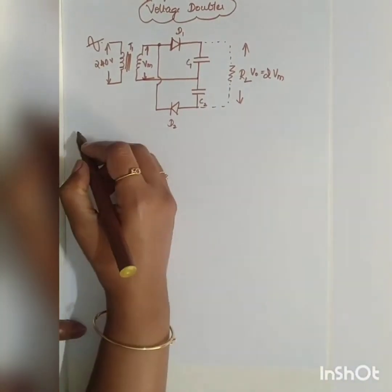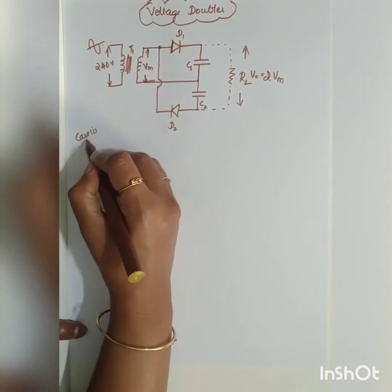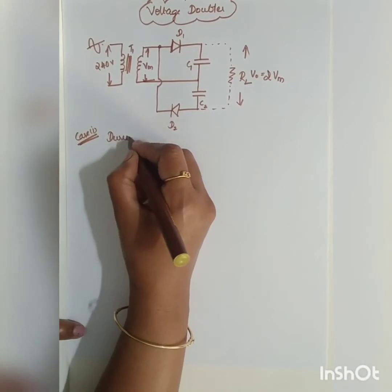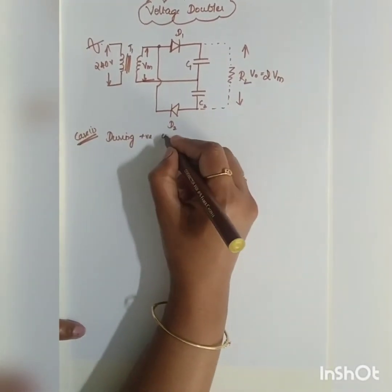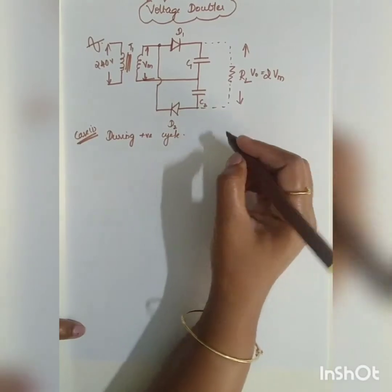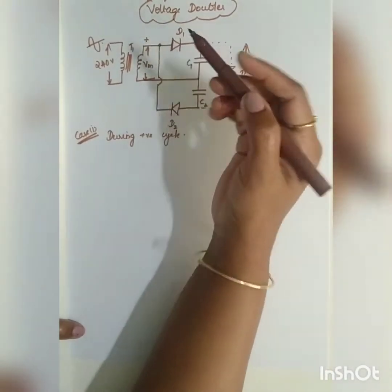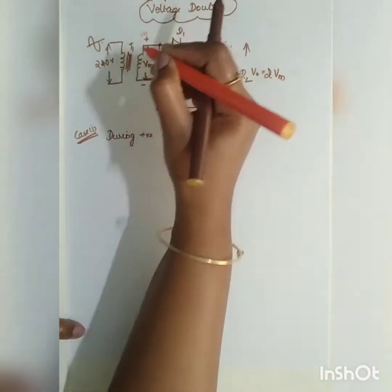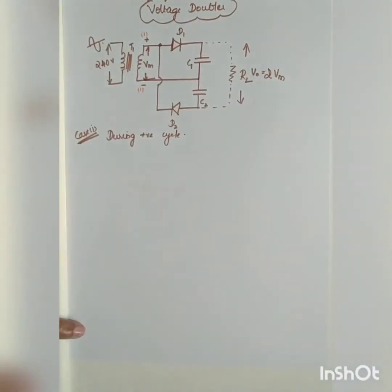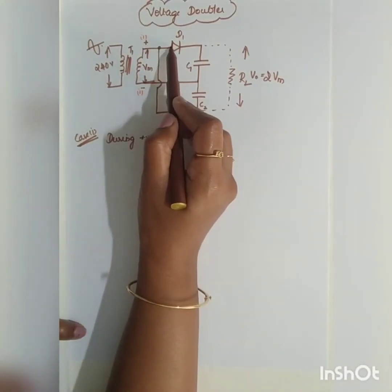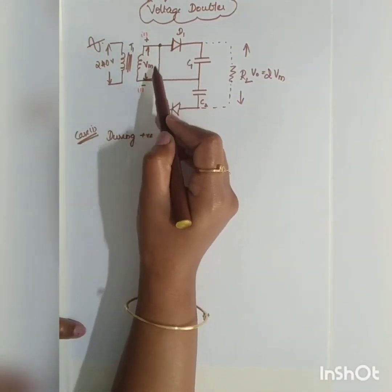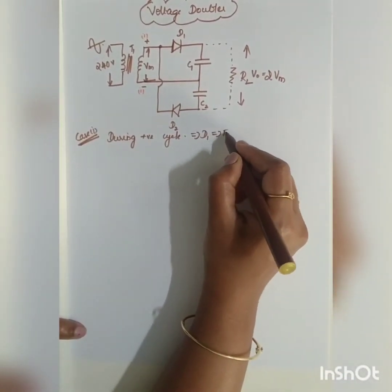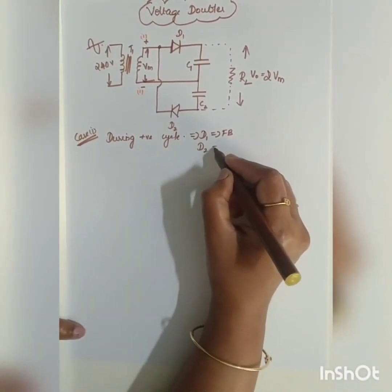Let us consider two cases. Case 1 is during the positive half cycle of the input signal. During the positive half cycle, the top terminal becomes positive and the bottom becomes negative. In this condition, diode D1 will be forward biased and diode D2 will be reverse biased.